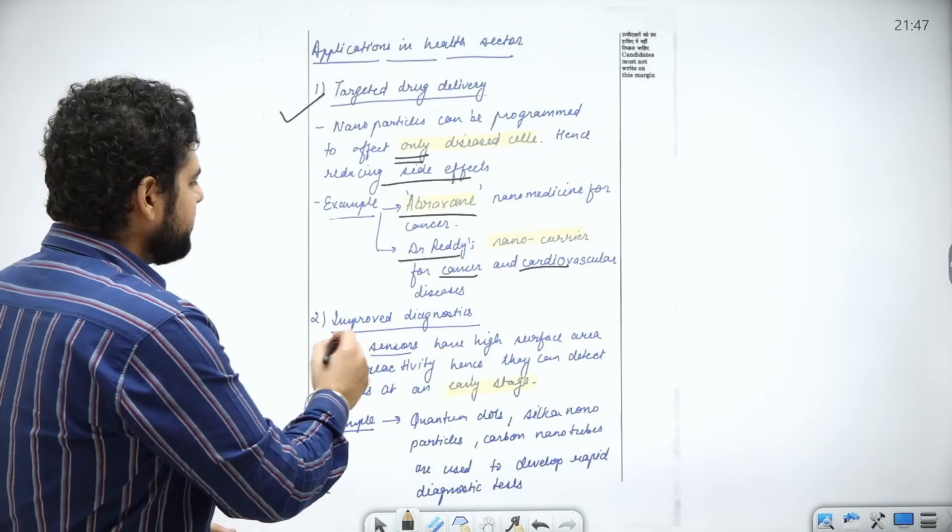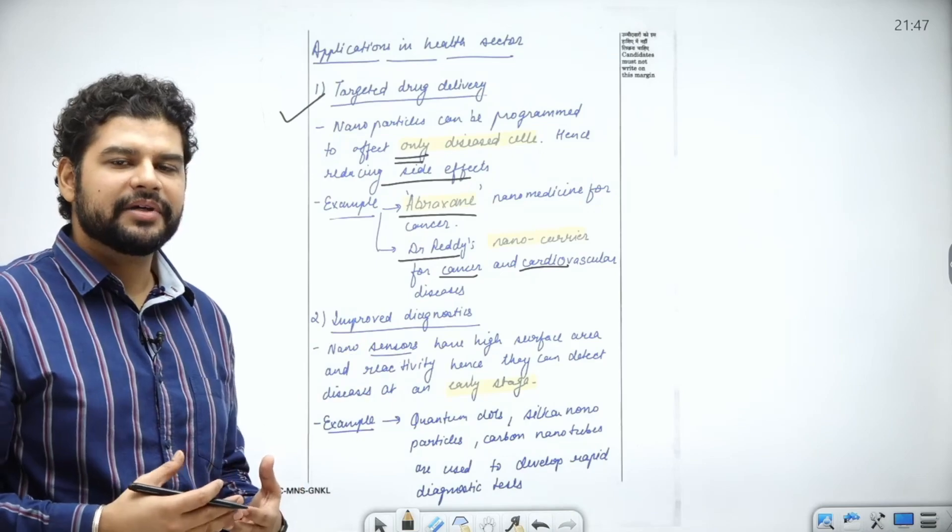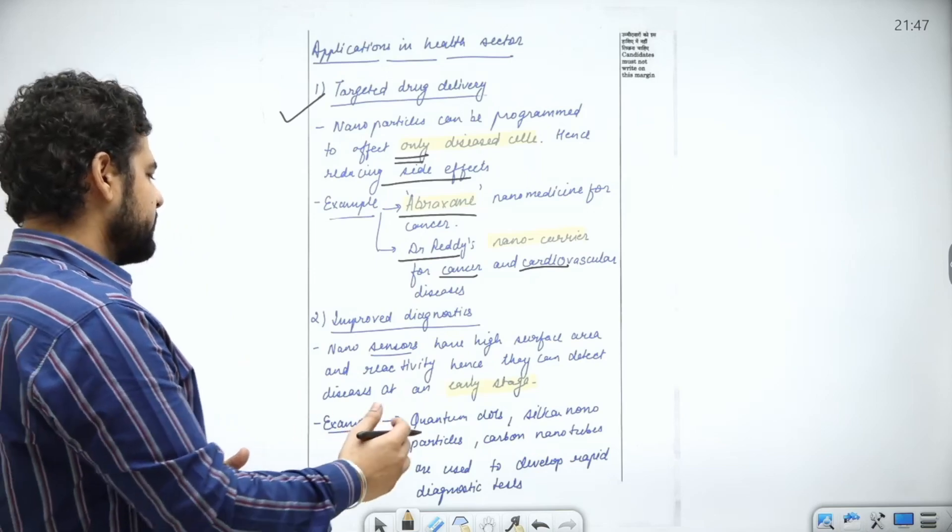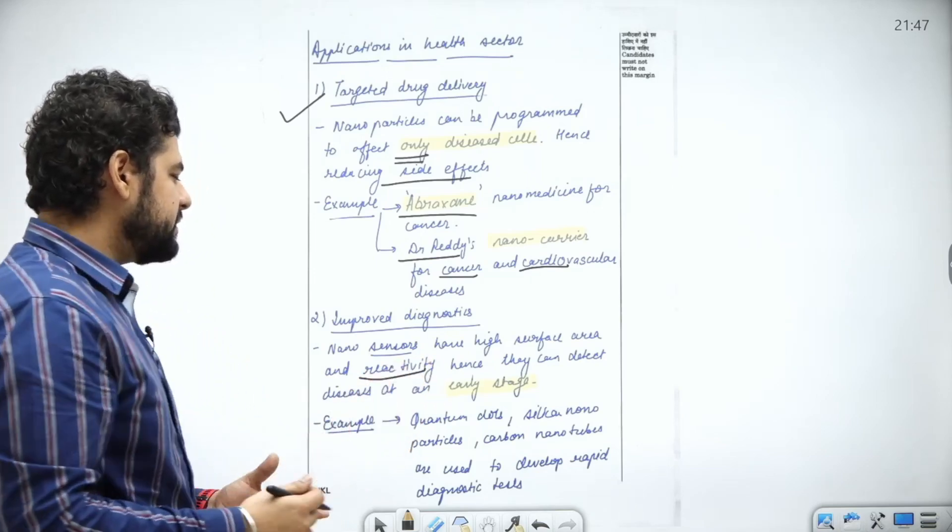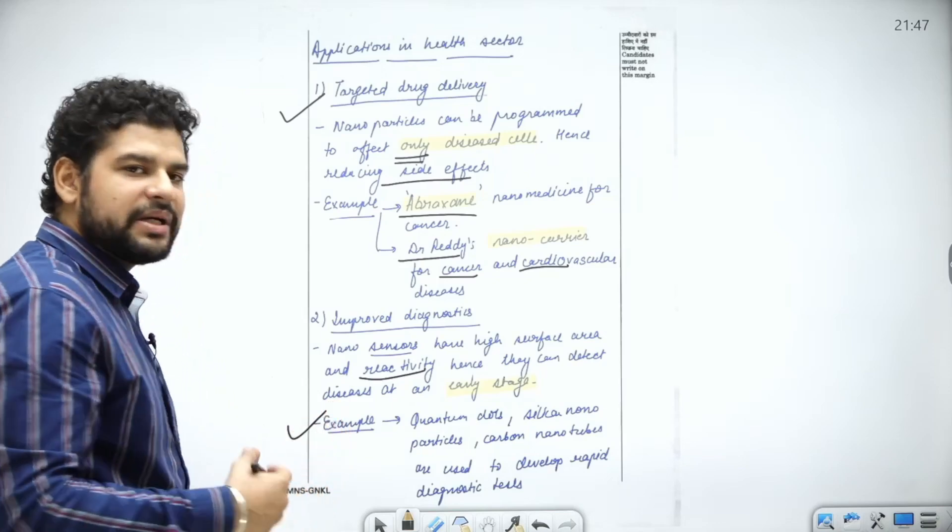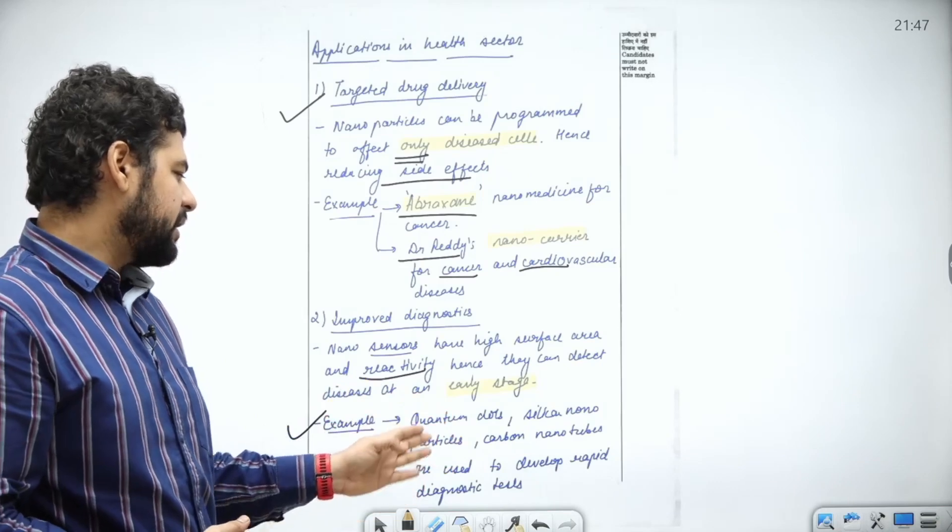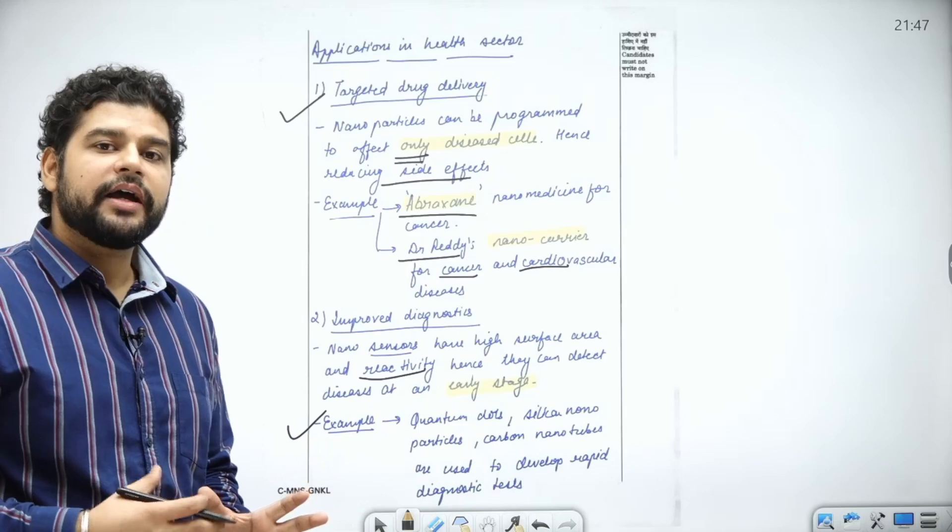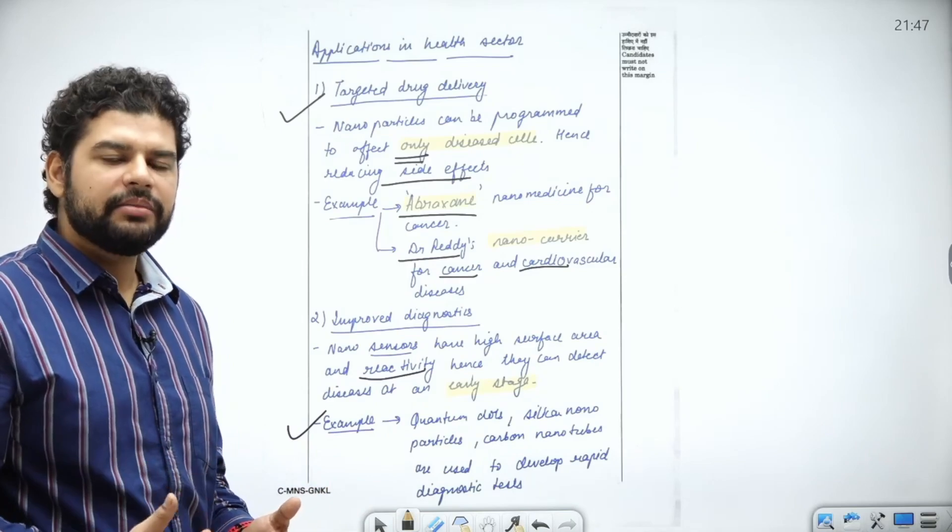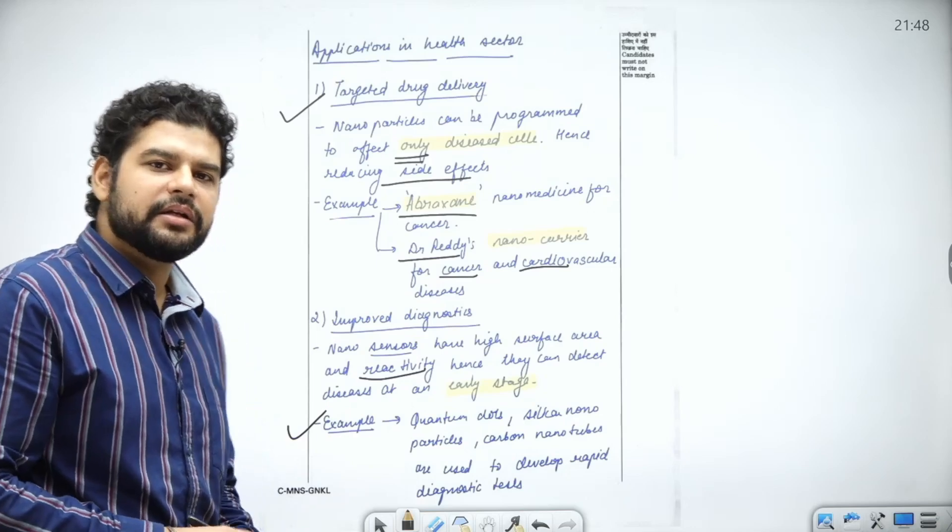Second is improved diagnostics. In the health sector, correct diagnosis at the correct time is extremely crucial. Nanosensors have high surface area and reactivity, hence they can detect diseases at early stages. There are a lot of materials currently being used like quantum dots, silica-based nanoparticles, carbon nanotubes. Kits are being developed for early detection.